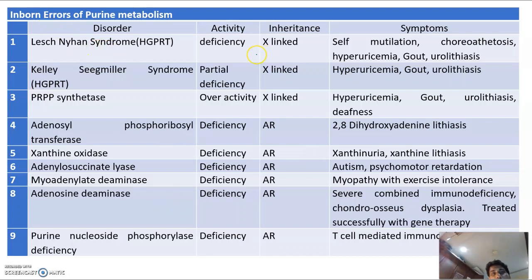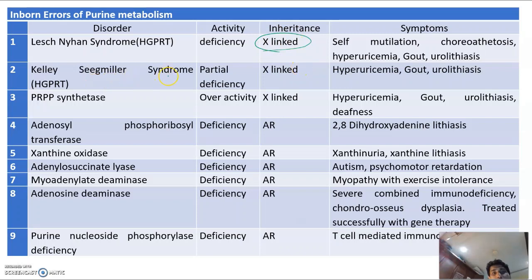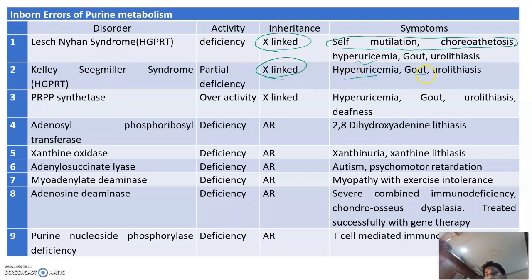Lesch-Nyhan syndrome: complete deficiency of HGPRT (hypoxanthine-guanine phosphoribosyltransferase) — X-linked recessive. Features: self-mutilation, choreoathetosis, hyperuricemia, gout, and urolithiasis. Kelly-Seegmiller syndrome: partial deficiency of the same enzyme HGPRT — also X-linked. Features: hyperuricemia, gout, and urolithiasis, but no neurological sequelae.